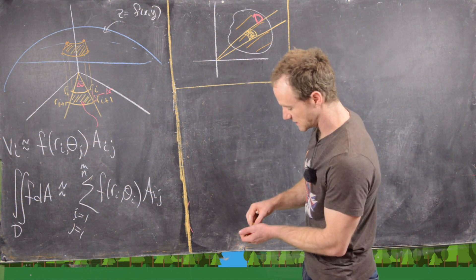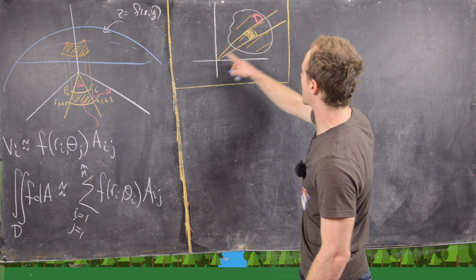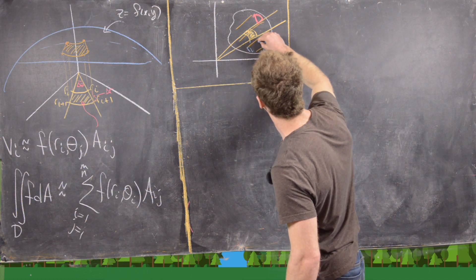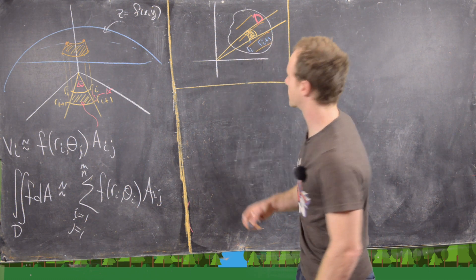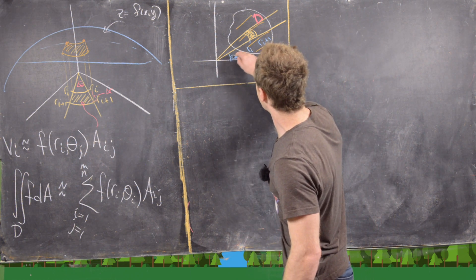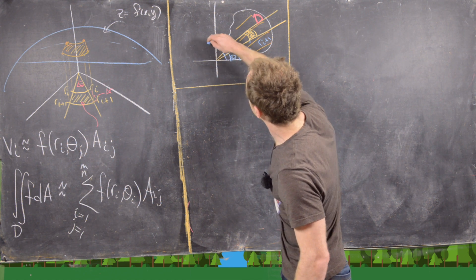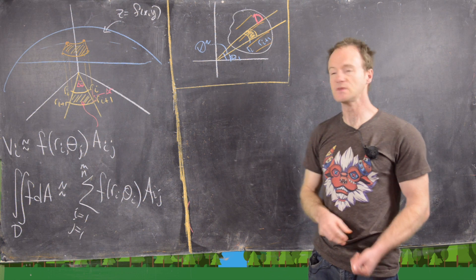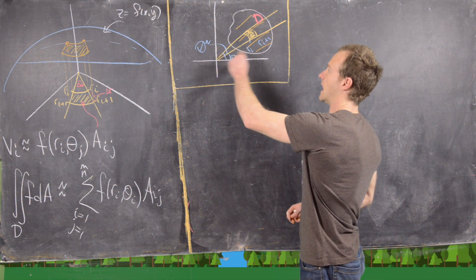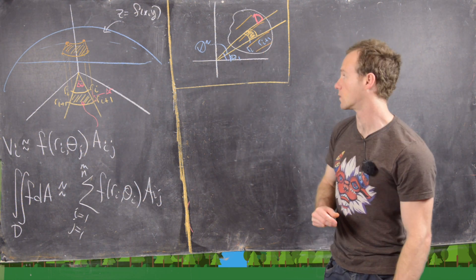We would split the region up into pieces in the following way. Notice I've got two rays coming out from the origin. This would be like an r_i value, and this would be like an r_{i+1} value — those are distances from the origin. This would be a θ₁ value and this would be a θ₂ value. So by varying θ and r, we'll be able to build all the parts of this region via polar coordinates.